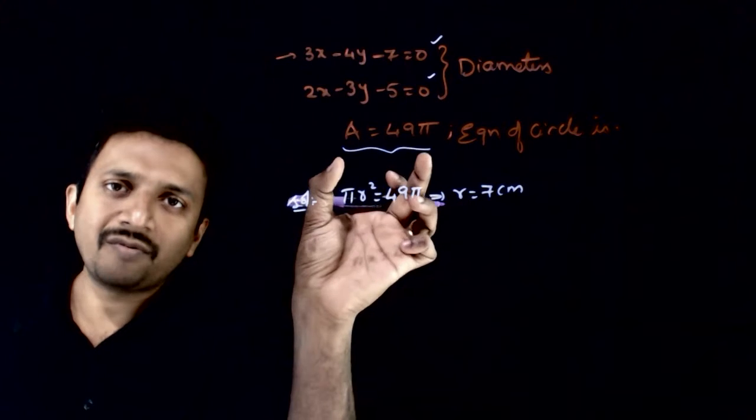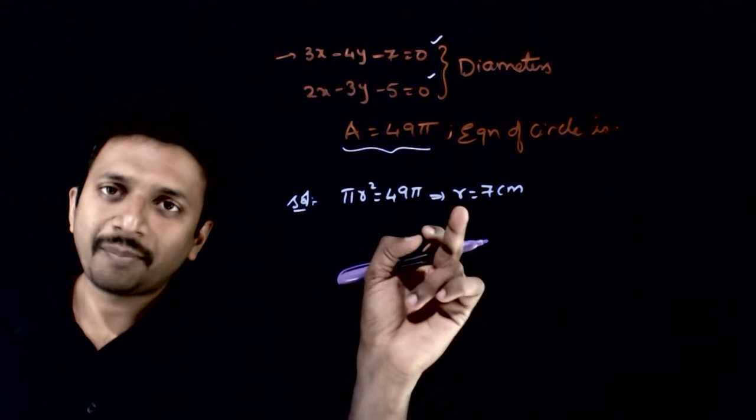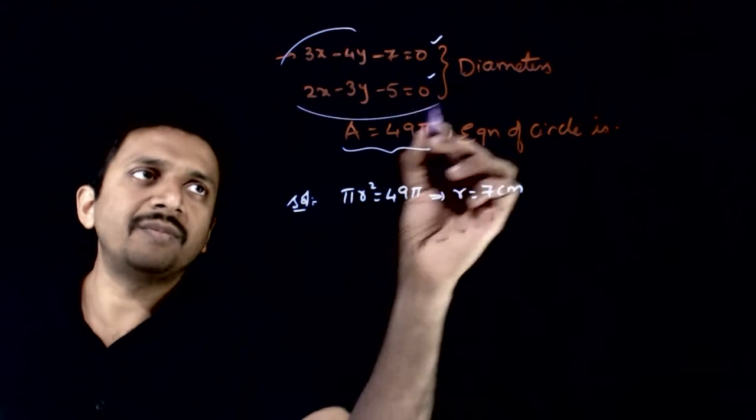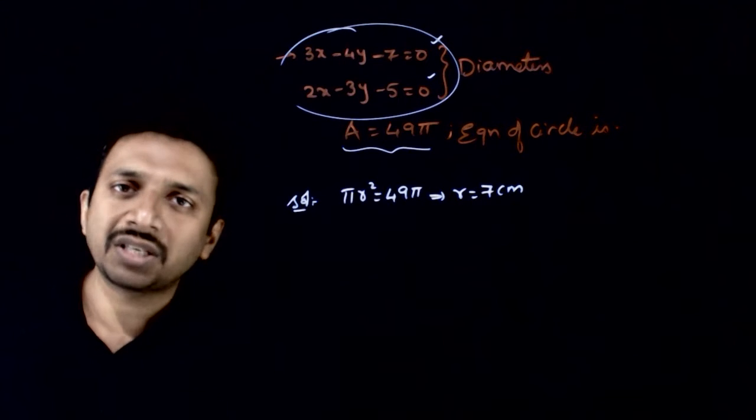If you want the equation of circle, apart from radius, you need to know the center. The center can be found out from this information because these two represent two diameters, so the point of intersection has to be the center.